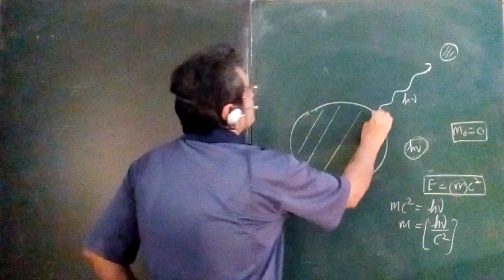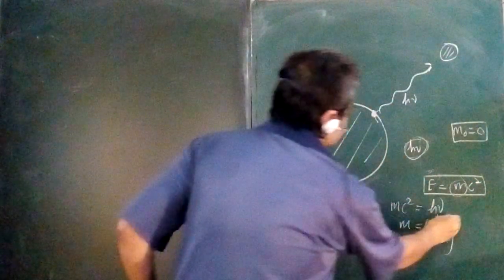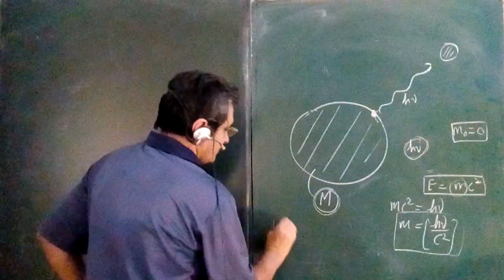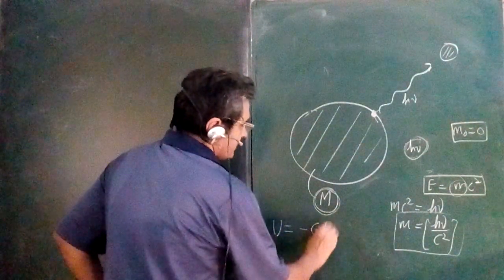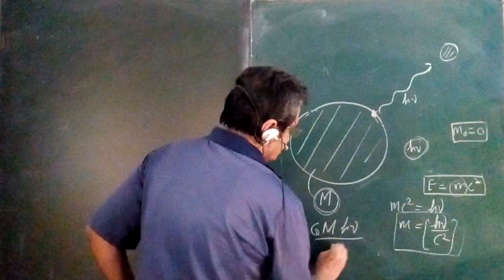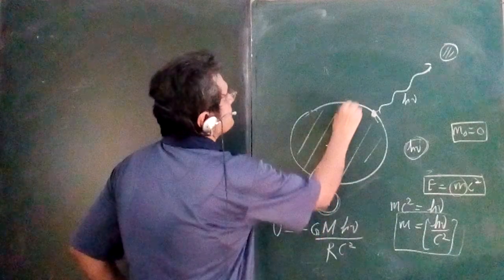Now what is the potential energy when it is emitted? For this mass equivalent of this photon will be minus GM and what is m is h nu upon c² and this r is the radius of this star.